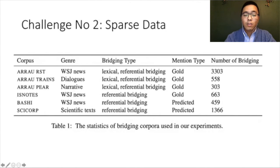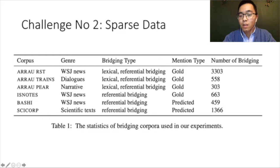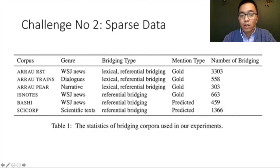The second challenge is that data is very sparse — we don't have much bridging reference in the corpora. The largest corpora we can find, IST, only contains around 3k examples. All other corpora are much smaller; for example, ISNode only contains around 1,600 examples. As mentioned, IST annotated both types of bridging, while ISNode, BASH, and ScienceCorp only annotated the first type of bridging reference.